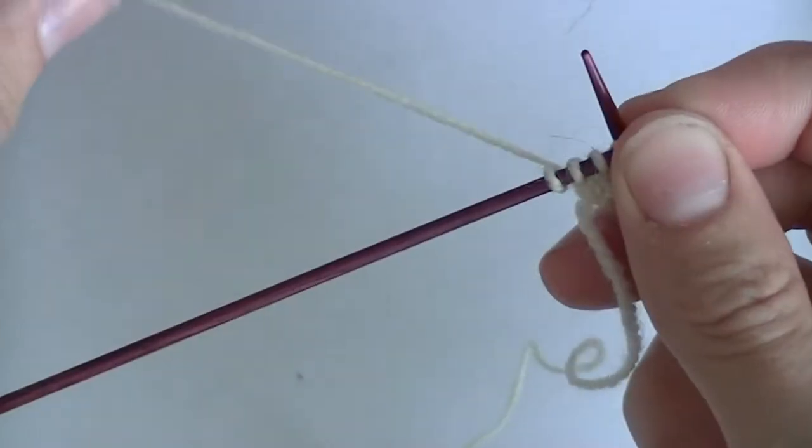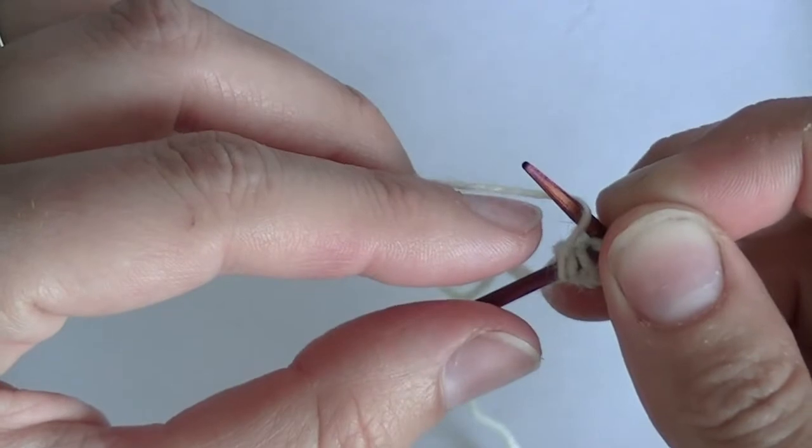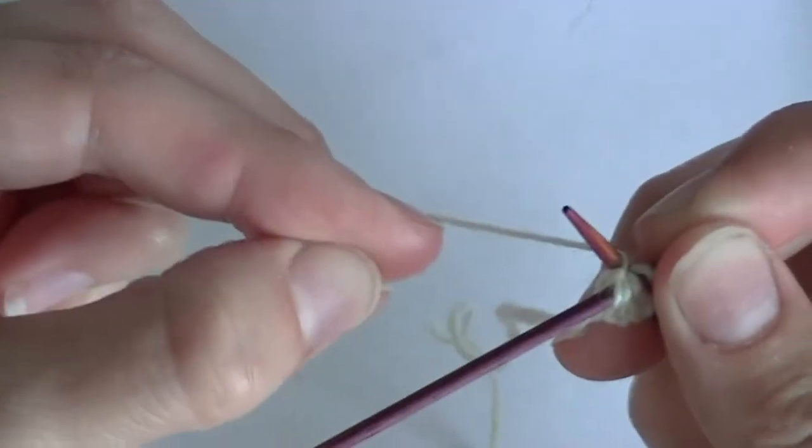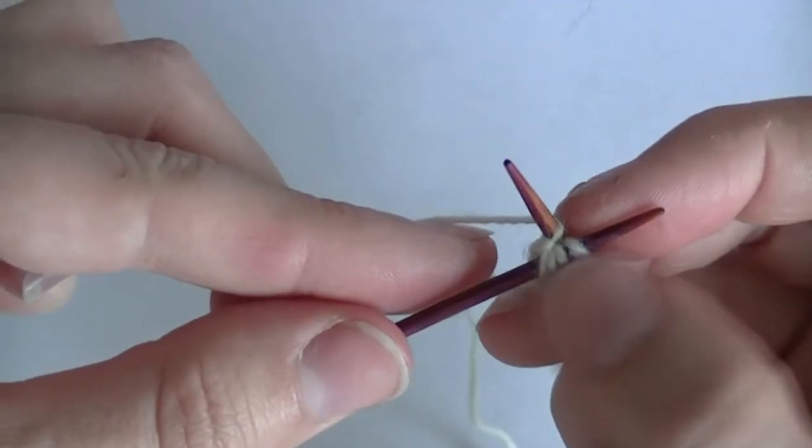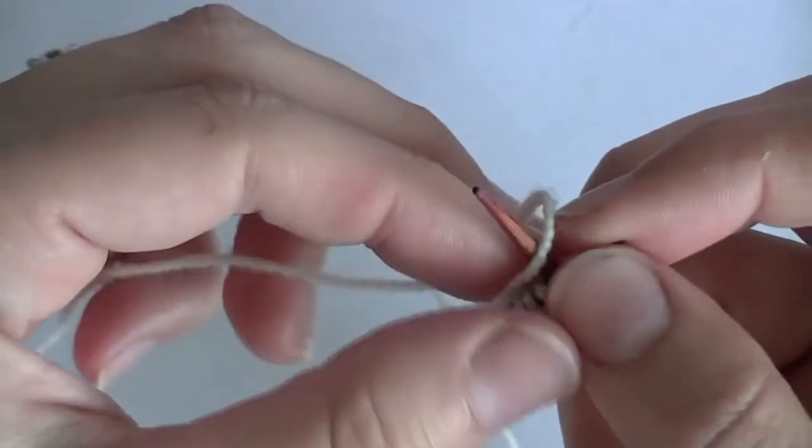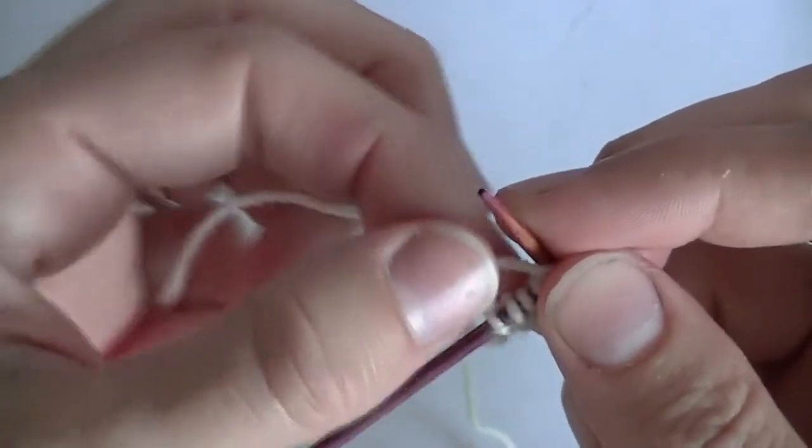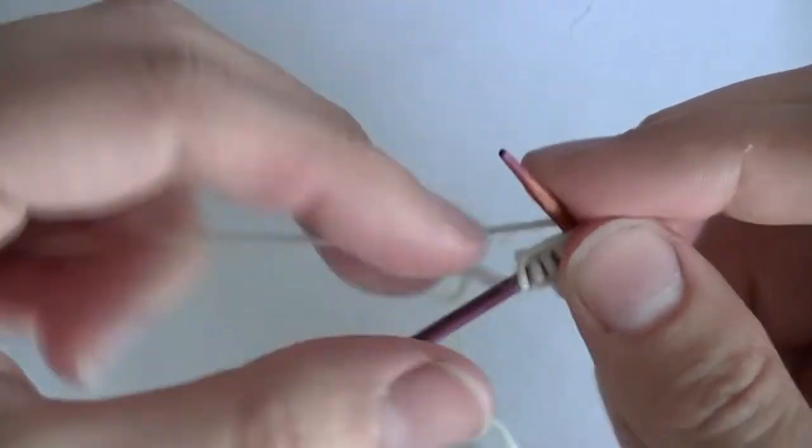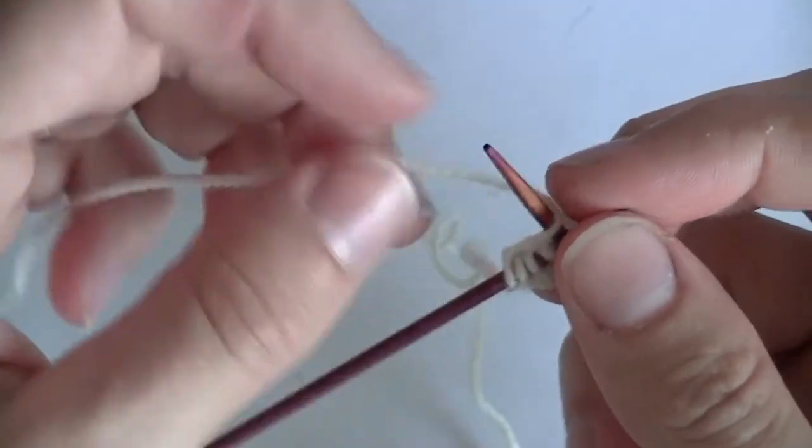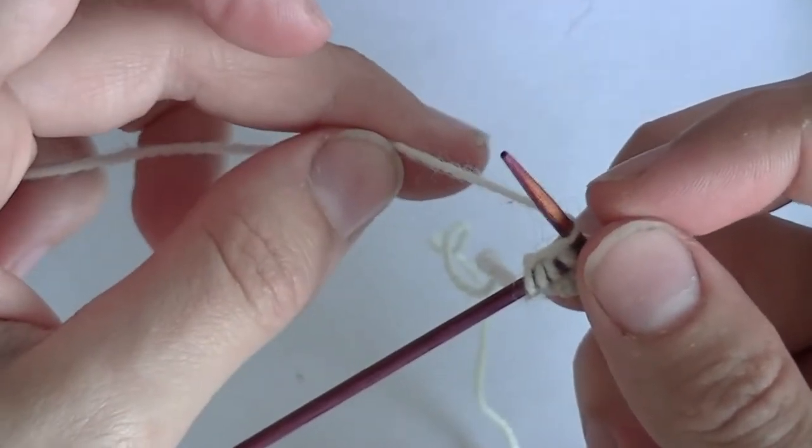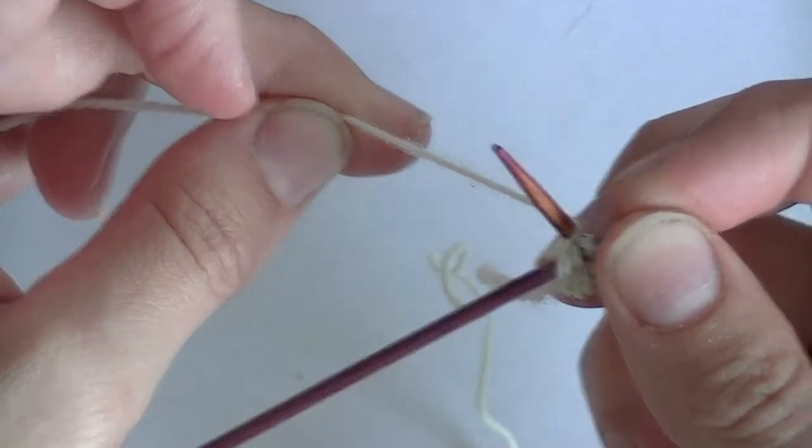So take your working yarn from over here. And when you do this you kind of want to pull it a little snug. You don't want to do super crazy tight like this where it's really pulling everything. But you also don't want it to be like all loose with this loose loop hanging back here. Just kind of like this so you can see I'm pulling it just taut but not super tight like that.